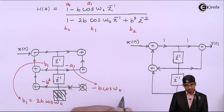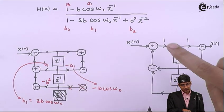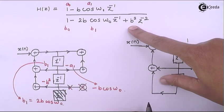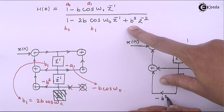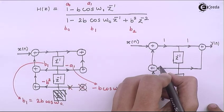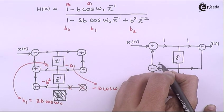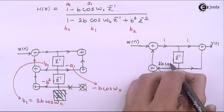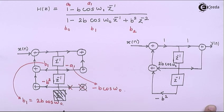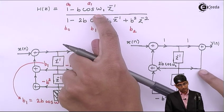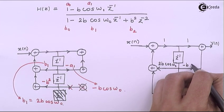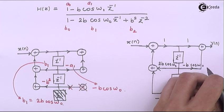Whoever goes in the backward direction flips the sign. Along z⁻² I have B₂, so I write minus b². Along z⁻¹ in the feedback I have −2b, so I write plus 2b·cos(ω₀). In the forward direction along z⁻¹ I have minus, so I write minus b·cos(ω₀). That completes the Direct Form 2 structure.